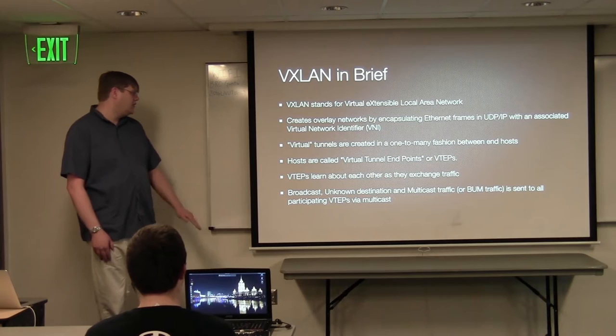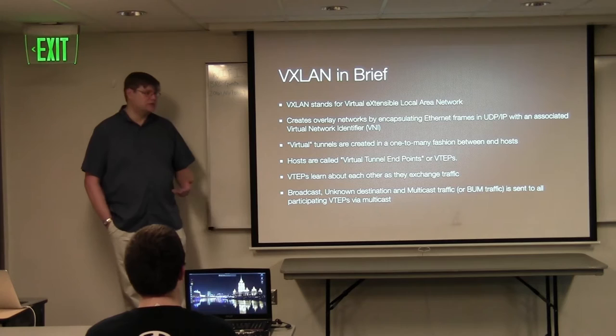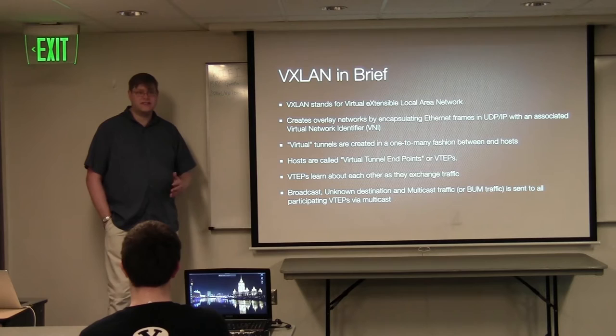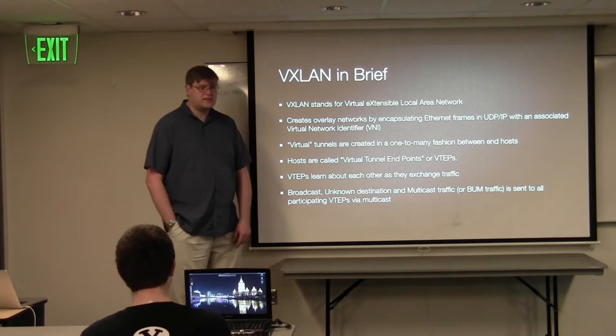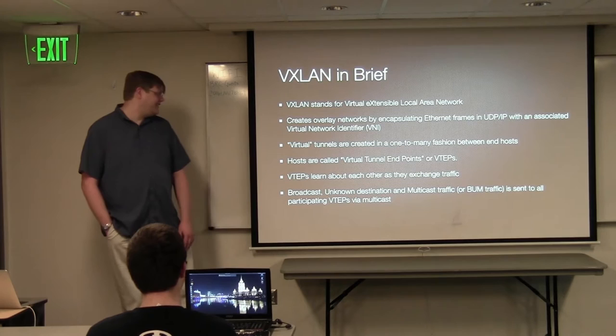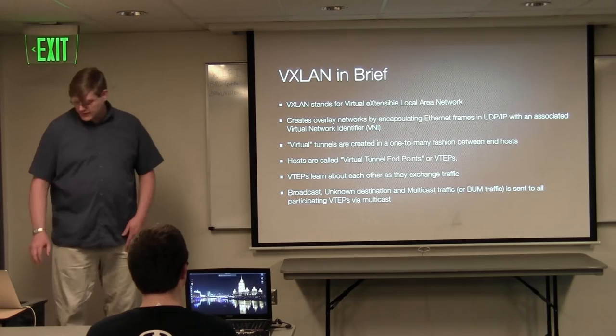They're called VTEPs for short — virtual tunnel endpoints. The host itself is the endpoint. Normally, when a host discovers who it's supposed to be talking to for a given destination or MAC address, it sends it directly via unicast to that IP. If it doesn't know — if it's a broadcast packet, a multicast packet, or an unknown destination — what the documentation calls BUM traffic — then it just gets sent to everybody via the multicast group. It's kind of elegant, assuming multicast isn't broken on your network.